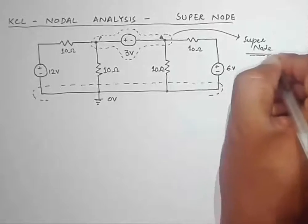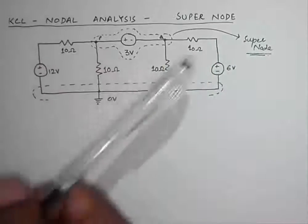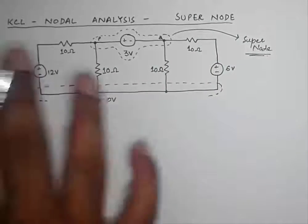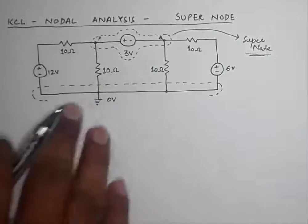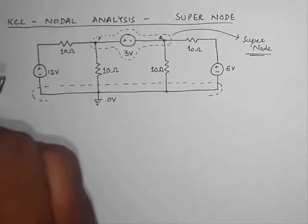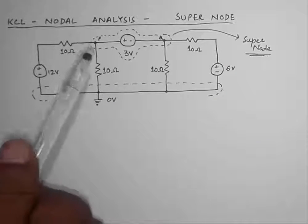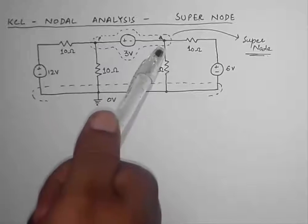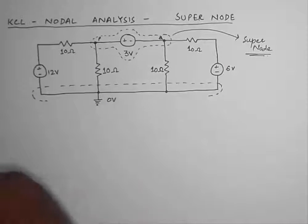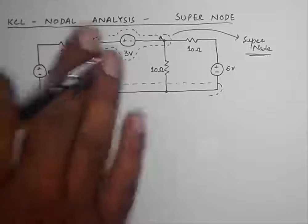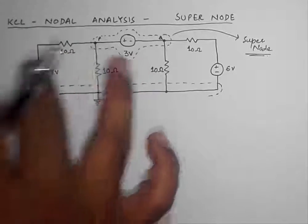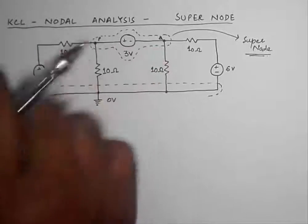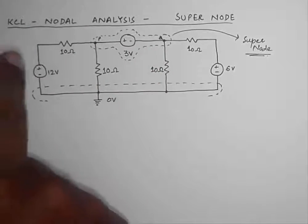Basically what we are going to do with this supernode is we are going to treat it as a single node. The voltages on either side of the voltage source will remain P and Q, but we are going to treat this whole node as a single node.